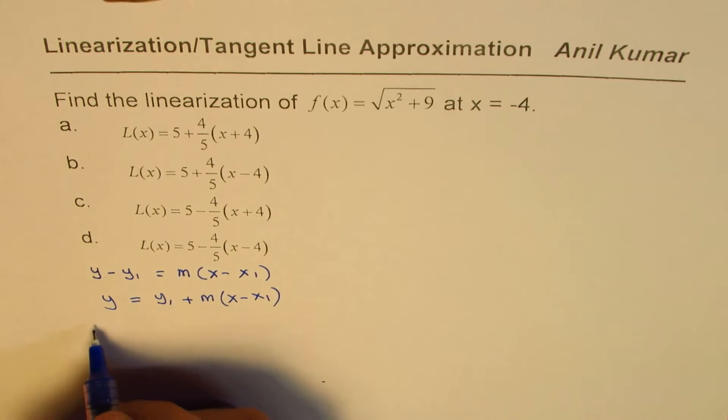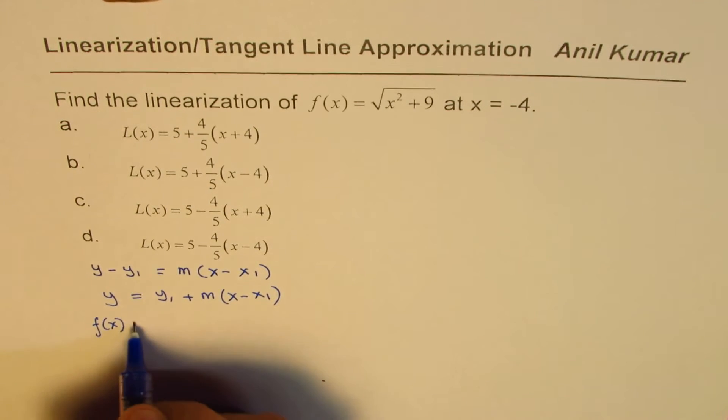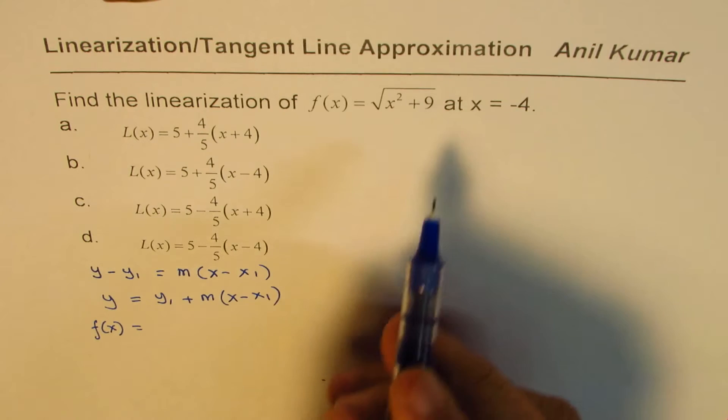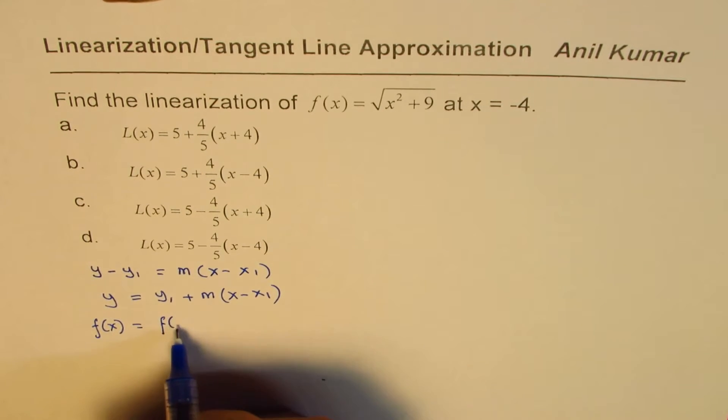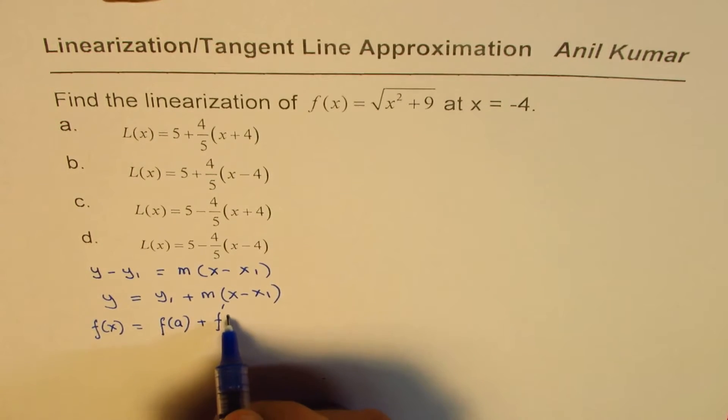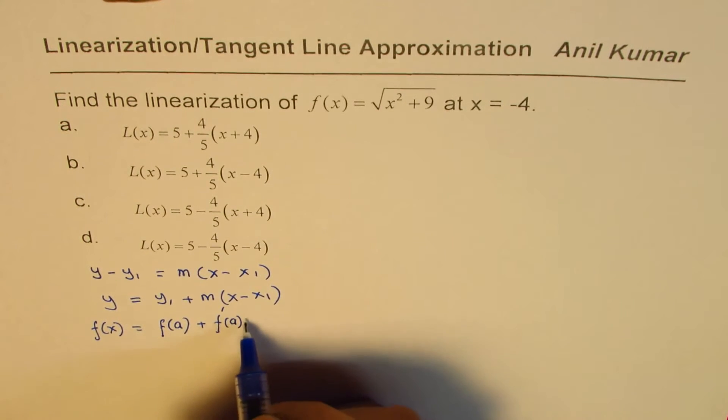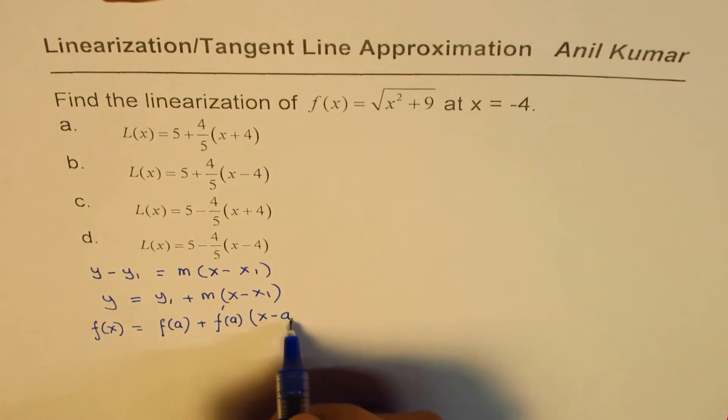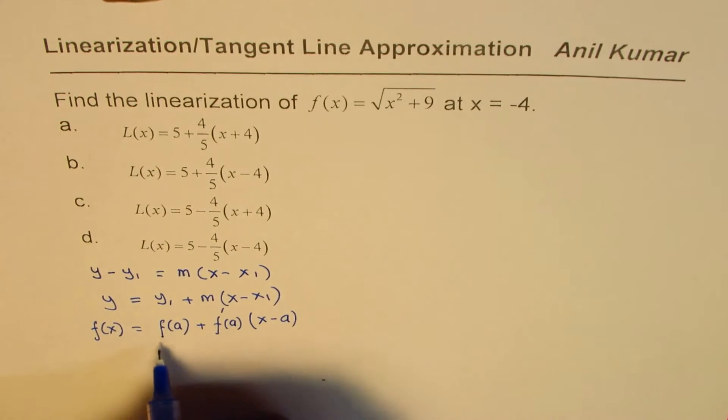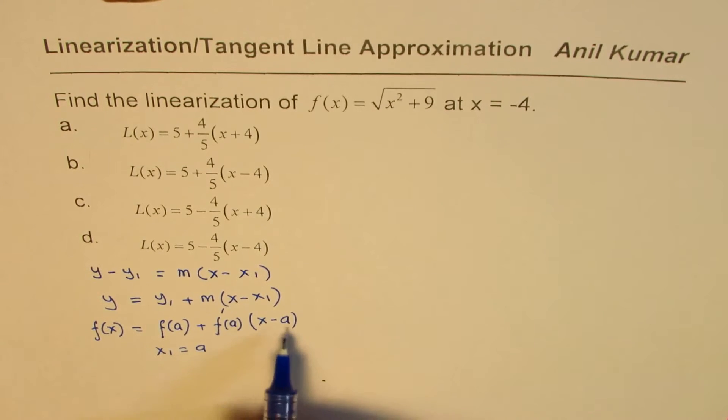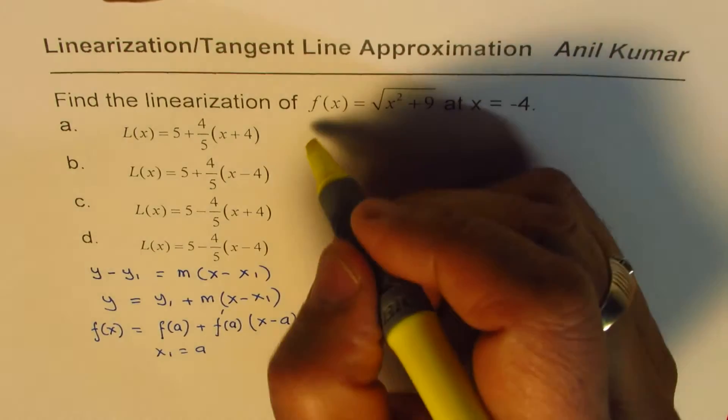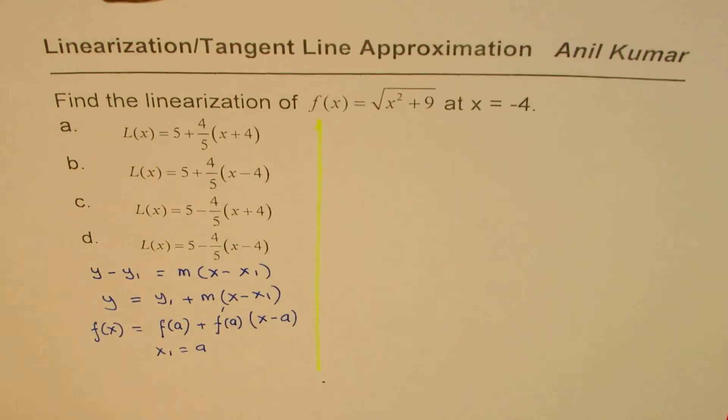In function notation, we will normally write this as f(x) equals f(a) plus the derivative at given point a times x minus a, where x1 equals to a. That is the base to solve this question.